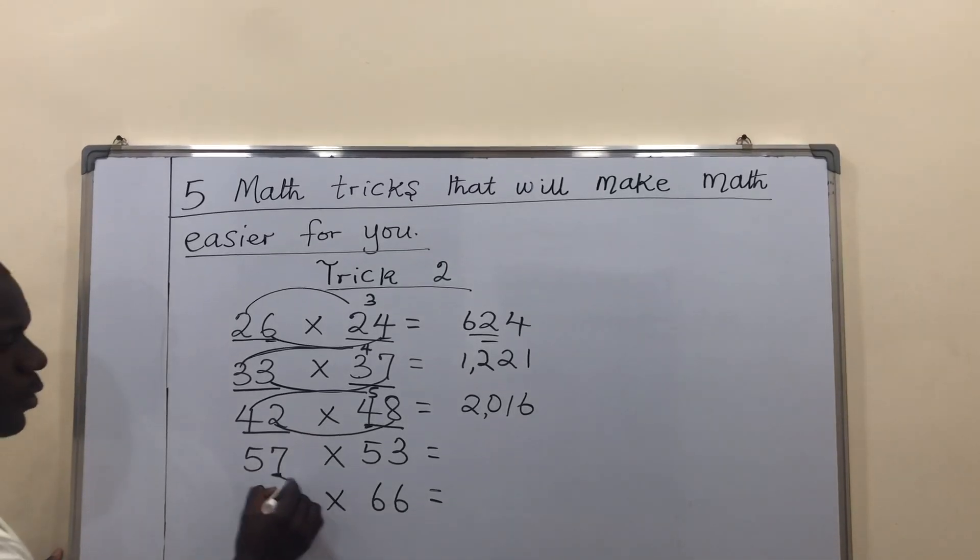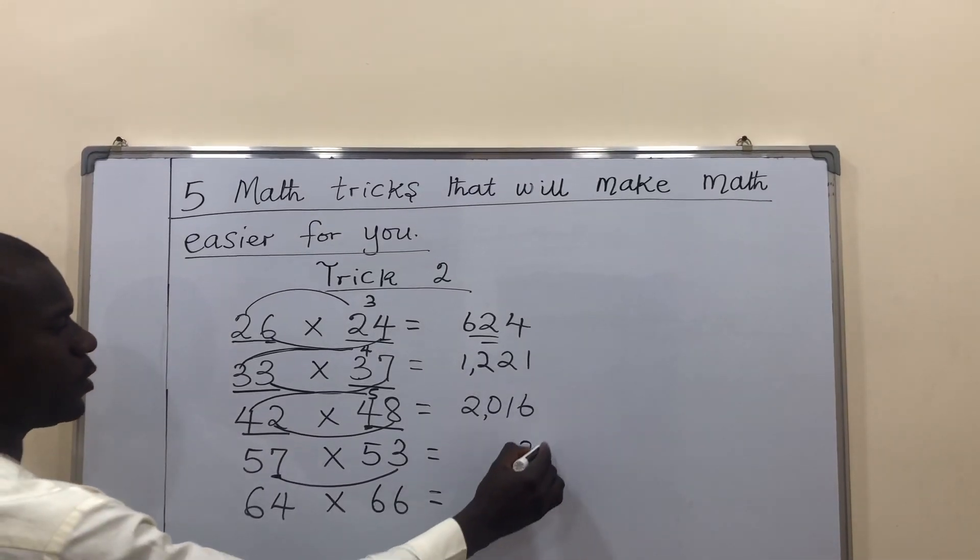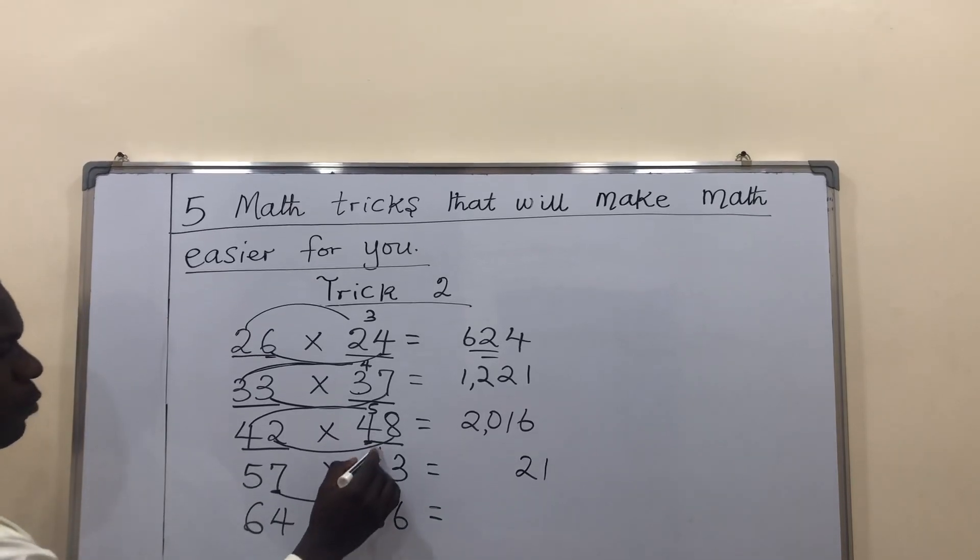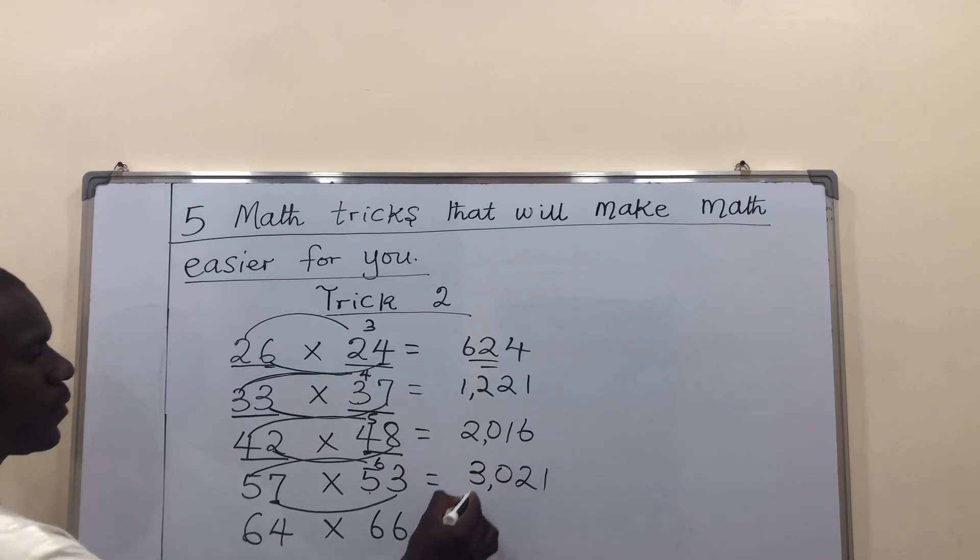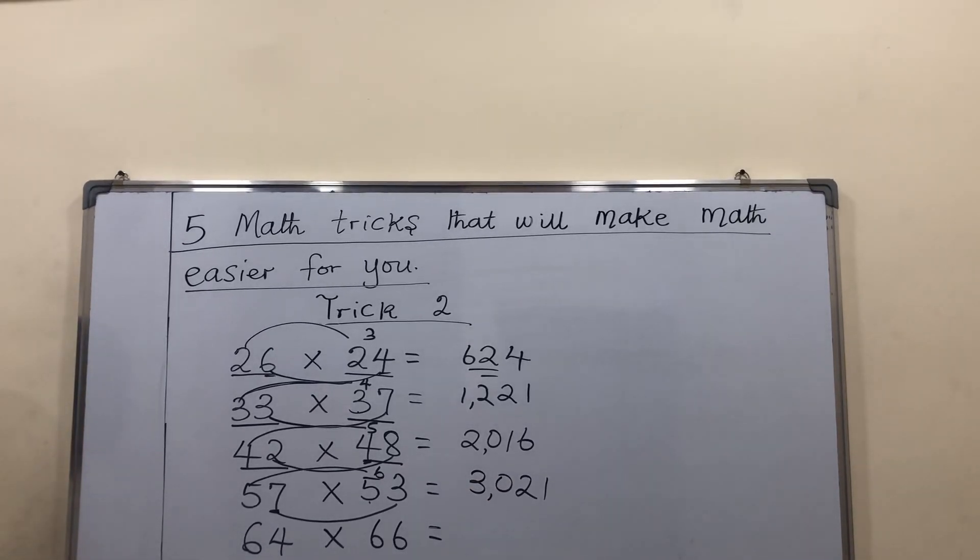The fourth one, the units 7 times 3 is 21. After 5, what comes next? 6. 5 times 6 is 30. My answer is 3021.